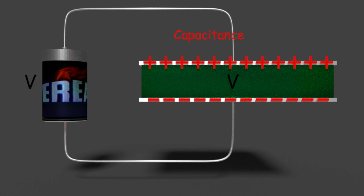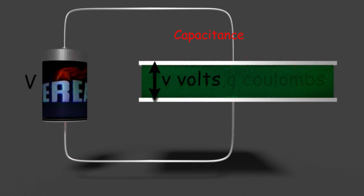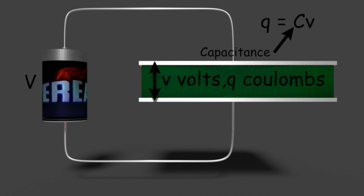For a certain capacitor, if the voltage appearing across it is V volts for which Q coulombs of charge is stored in it, then we can write Q is proportional to V, or Q equals C into V. This C is the constant of proportionality known as capacitance of the capacitor. This equation can be rewritten as C equals Q by V.